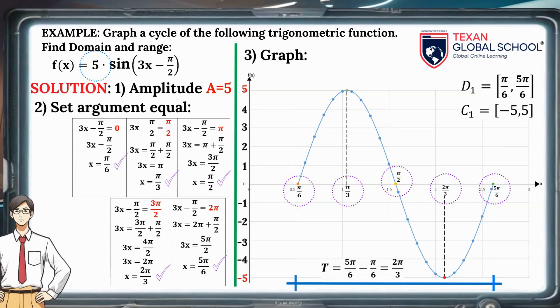We can see that the behavior of the sine function is not altered. It simply becomes larger or smaller depending on the numerical coefficient of the function, and thinner or wider with more or less offset depending on the argument.